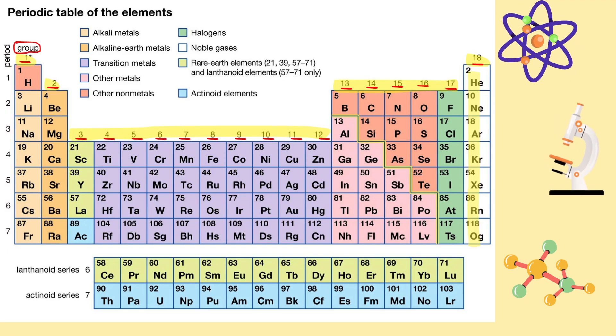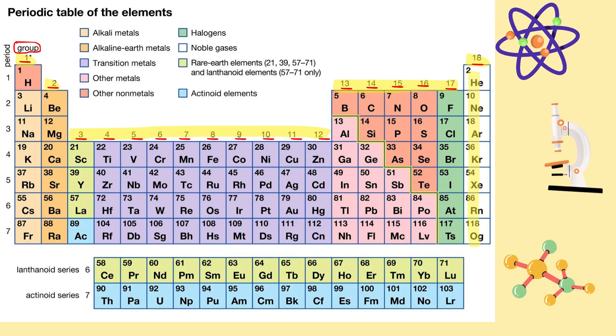Vertical columns are also called groups. There are 18 groups and they have different properties. For example, group 18 has the noble gases: helium, neon, argon, radon, krypton, and xenon, which have low melting and boiling points and are each colorless, odorless, tasteless, and non-flammable. This group is called the low chemical reactivity group.